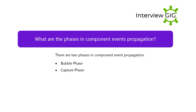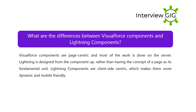What are the phases in component event propagation? There are two phases in component event propagation: the Bubble phase and the Capture phase. What are the differences between VisualForce components and Lightning Components? VisualForce components are page-centric and most of the work is done on the server. Lightning is designed from the component up rather than having the concept of a page as its fundamental unit. Lightning Components are client-side centric, which makes them more dynamic and mobile friendly.